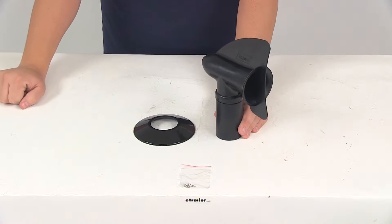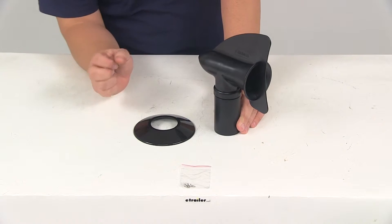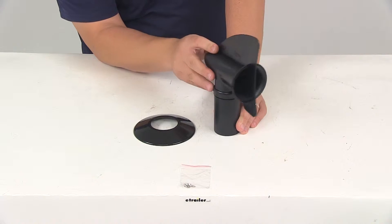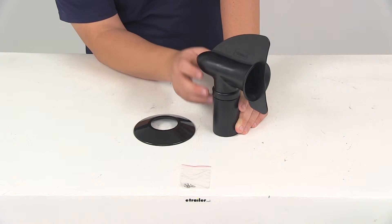Today we're going to be taking a look at part number CAM40597. This is the Camco Cyclone RV plumbing vent. This plumbing vent is going to attach to any RV with an inch and a half outer diameter pipe.